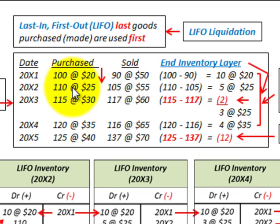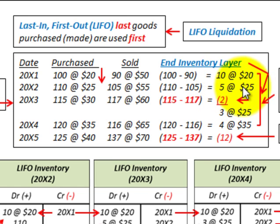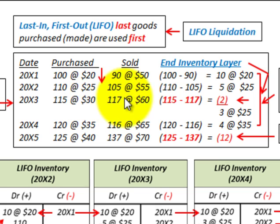For 20X2, we're going to have purchased 110 units and sold 105. The difference between the 110 purchased and 105 sold gives us 5 units remaining in ending inventory at $25 each — the purchase price. Then for 20X3, we're going to actually sell more than we purchase. We're going to purchase 115 but have sales of 117 units. So we're going to have to go back to 20X2 and use some of that inventory to cover our needs for 20X3, since we're 2 units short.